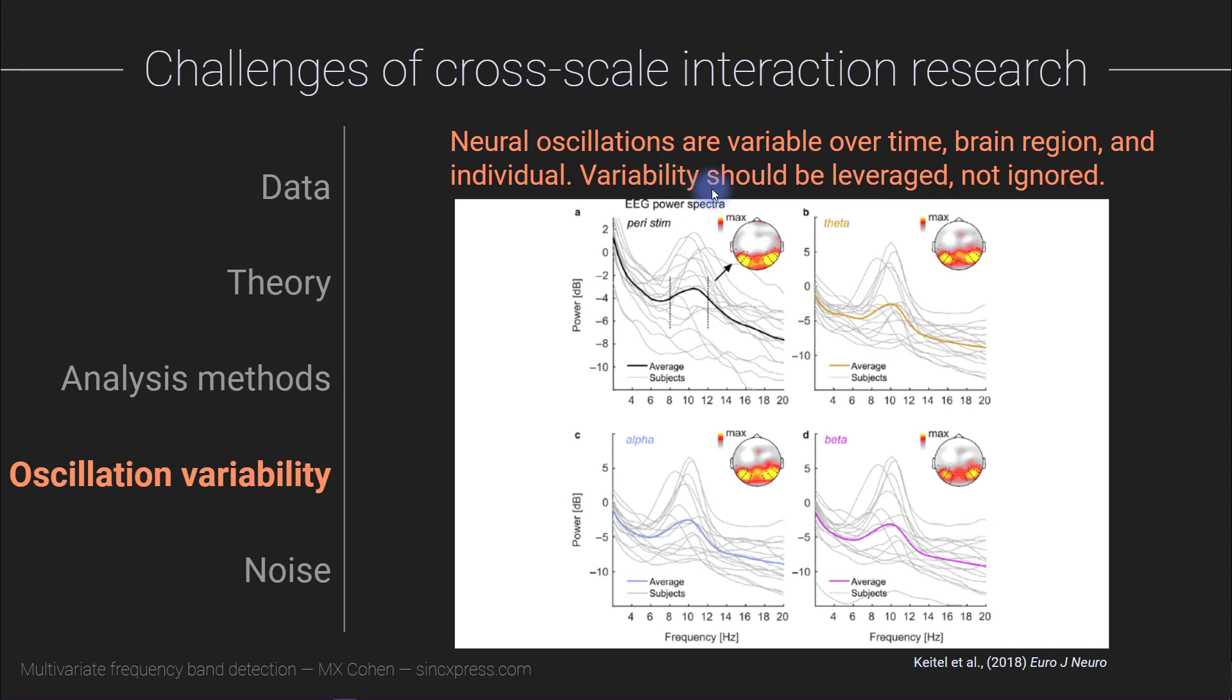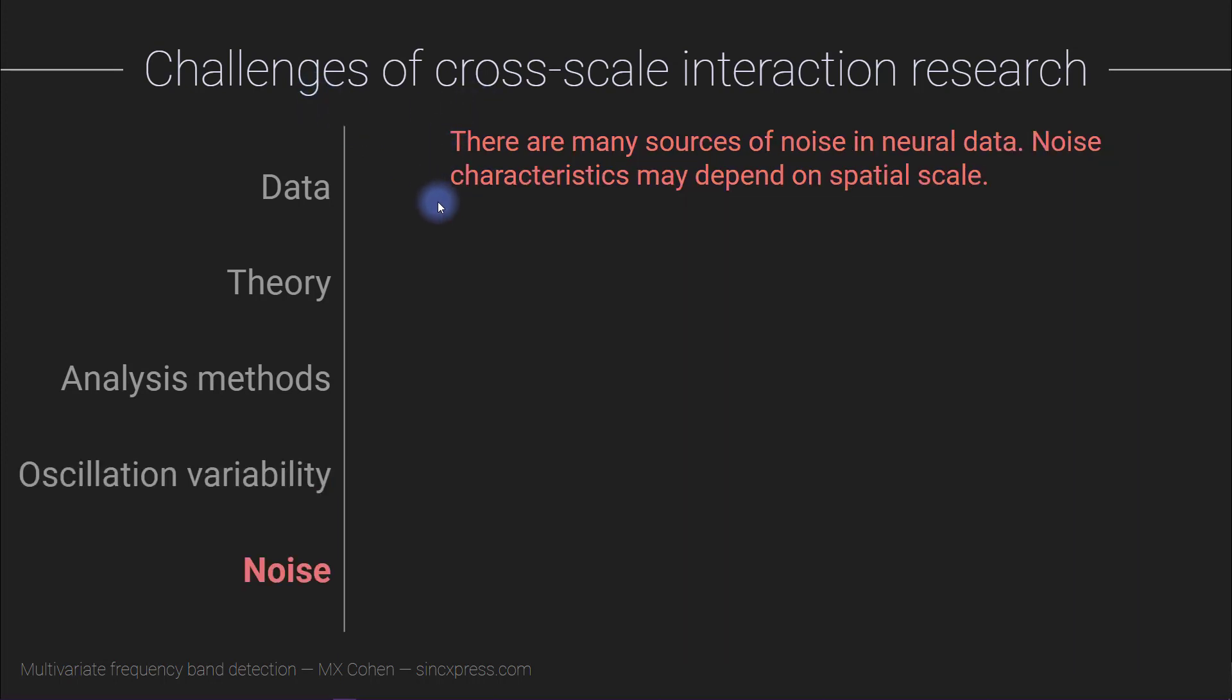And then the final challenge of doing cross-scale research is that there are many sources of noise in neural data, and the characteristics of the noise may depend on the spatial scale. Fortunately, however, multivariate data analysis methods allow us to leverage weak correlational patterns across many different channels in order to enhance the signal-to-noise ratio.